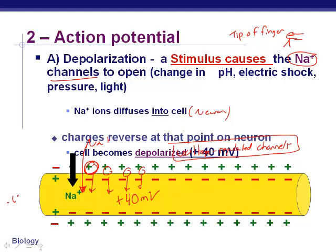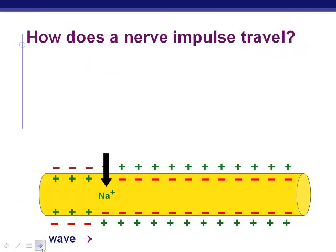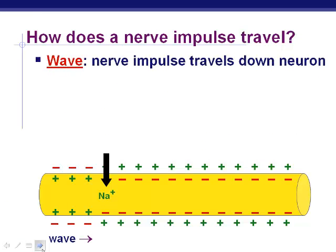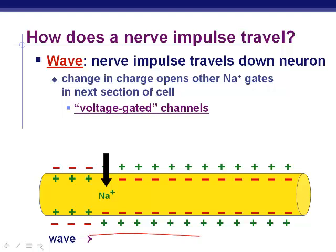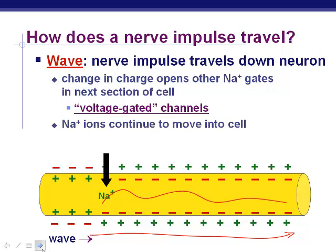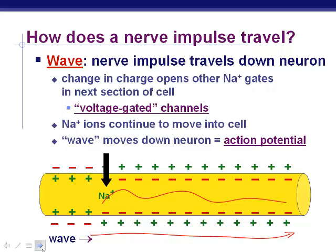It was minus 65 before with all those negatives inside, but now with all that extra sodium coming in, it's more positively charged at plus 40 millivolts. The change in charge opens other sodium gates, and they continue to open one after another, moving down the neuron just like a wave. Sodium ions continue to move in and travel down the neuron. This is what we call an action potential — the movement of a nerve impulse.